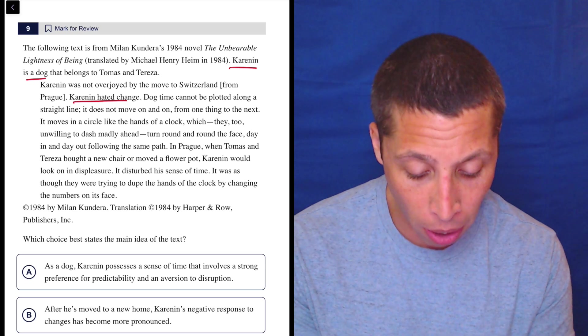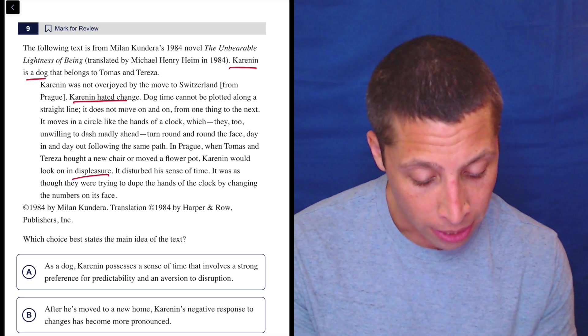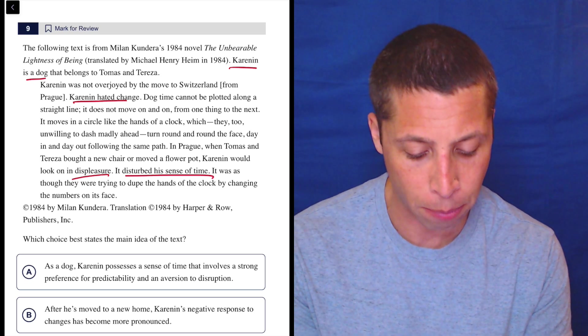In Prague, when Thomas and Teresa bought a new chair or moved a flower pot, Karenin would look on in displeasure. It disturbed his sense of time. It was as though they were trying to dupe the hands of the clock by changing the numbers on its face.